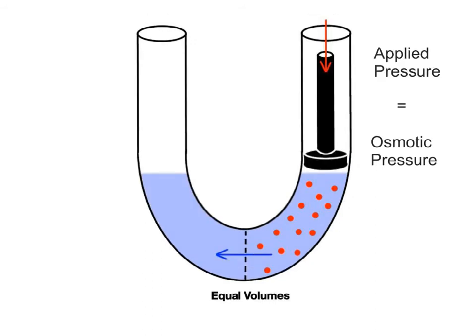We can restore the starting conditions of the water volumes in each arm by taking a mechanical piston, like a small plunger, and pushing down on the solution in the right arm. As more pressure is applied to this solution, more water molecules are forced across the membrane into the left arm. The amount of pressure we apply to the plunger is equivalent to the osmotic pressure.